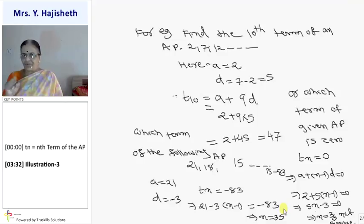Karke dekho. 21 minus 3N plus 3, so 24 minus 3N is minus 83. Right? So 3N will be 24 plus 83. 24 plus...